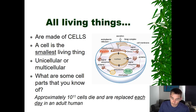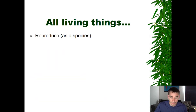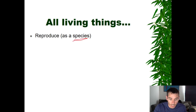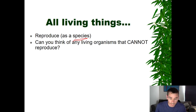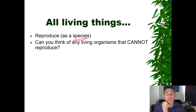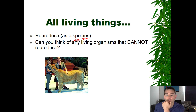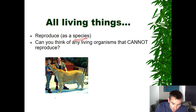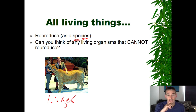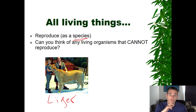The next characteristic is that all living things must be able to reproduce as a species. That phrase 'as a species' is an important one. Think about this: is there any living organism that cannot reproduce? Think about what you see in this picture — it's called a liger, which is a mix between a tiger and a lion. In fact, a liger cannot reproduce; it's sterile.